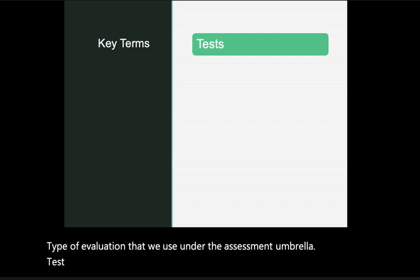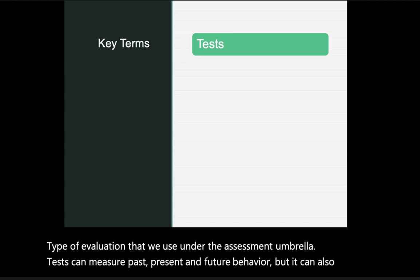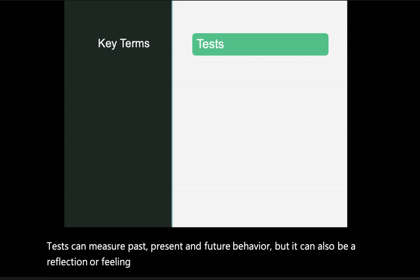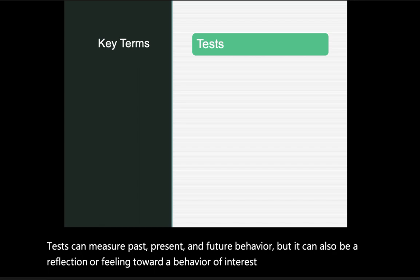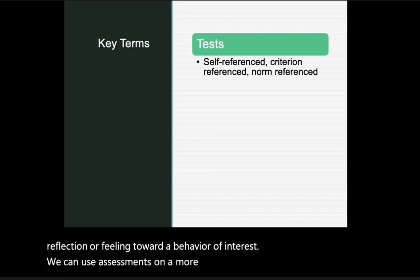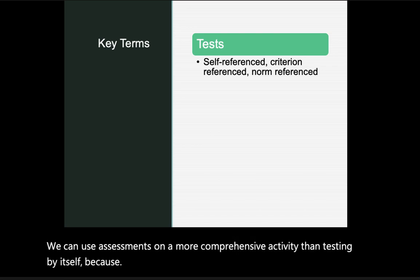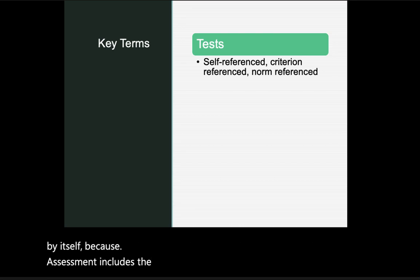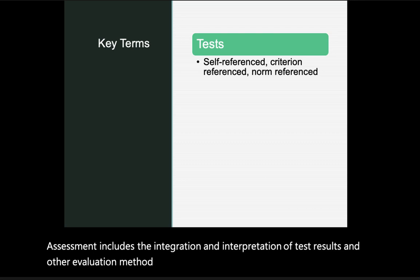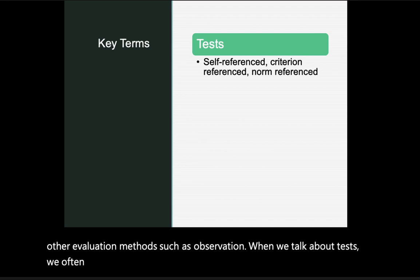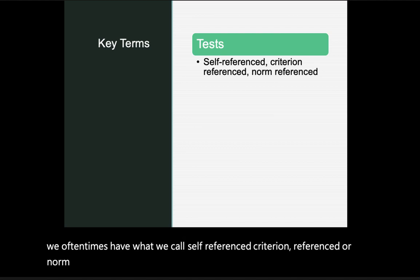Tests can measure past, present, and future behavior, and can also reflect feelings toward a behavior of interest. Assessment is more comprehensive than testing alone because it includes the integration and interpretation of test results alongside other evaluation methods such as observation. When we talk about tests, we often have self-referenced, criterion-referenced, or norm-referenced tests.